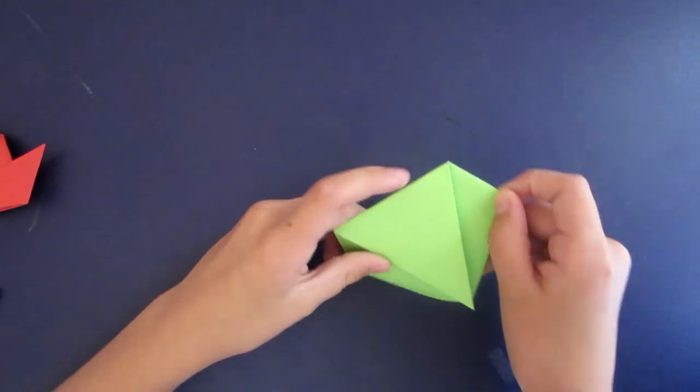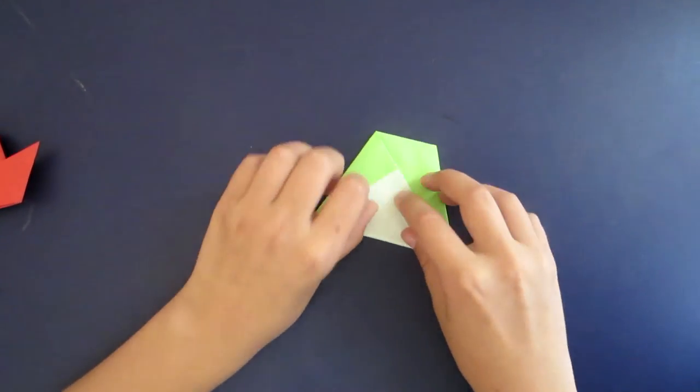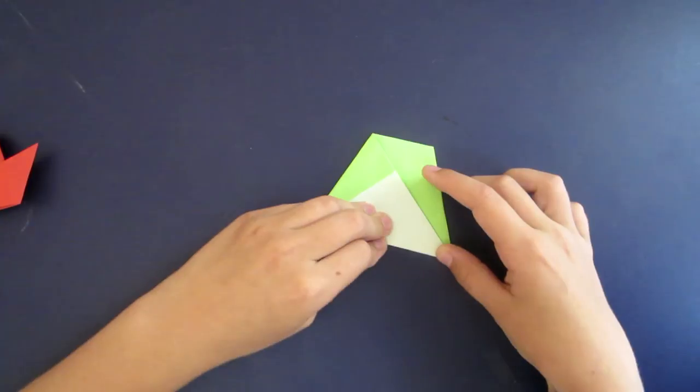Flip over and fold this triangle thing down. Now it looks like we're making a cup, but we're not going to make a cup today.